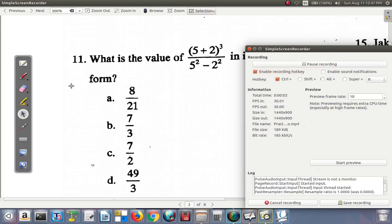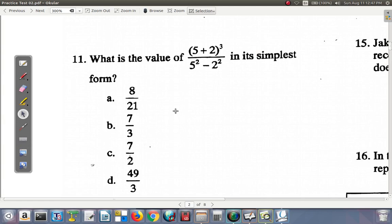Let's look at question 11 of practice test 2, a CSEC mathematics past paper. You have 5 plus 2 cube over 5 square minus 2 square. Well, you can't do what is in the bracket first. 5 plus 2 is 7, so it's actually 7 cube.